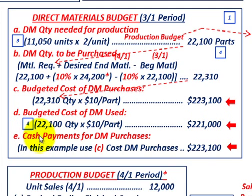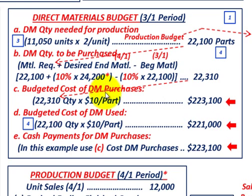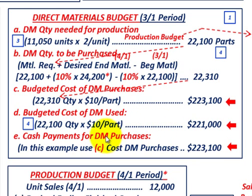Finally, for step five — cash payments for direct material purchases — this equals current period purchases paid in the current period plus prior period purchases paid in the current period. In this example we'll just use the current period purchases: $223,100. Remember, in practice you must account for both current and prior period purchases. That completes our direct materials budget calculations for March.